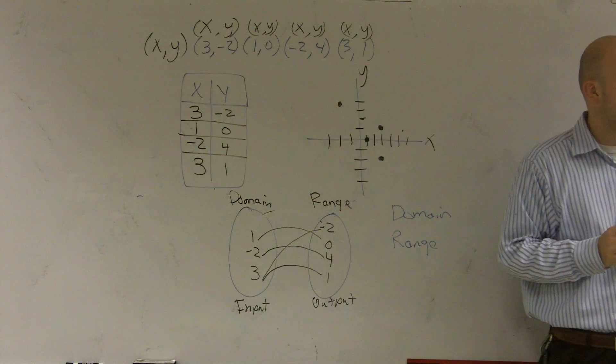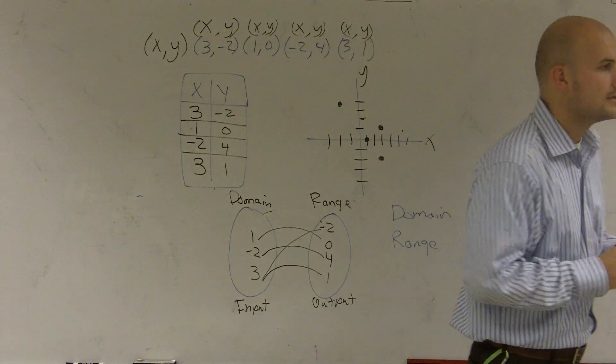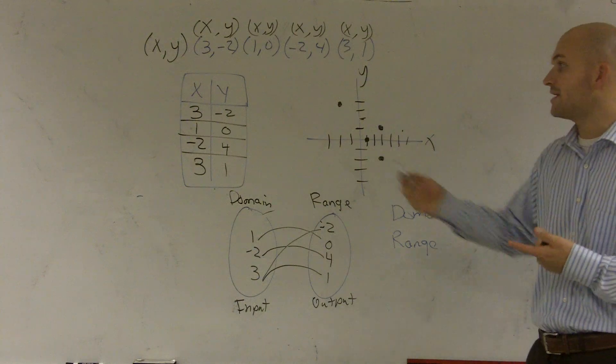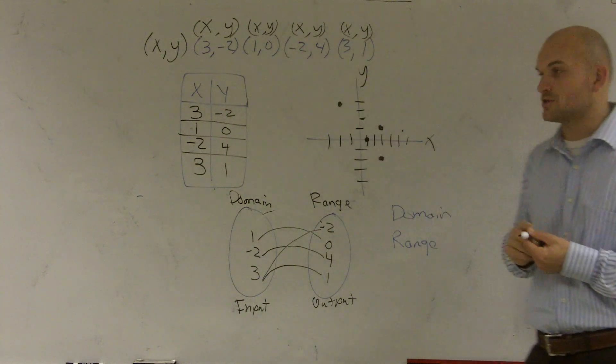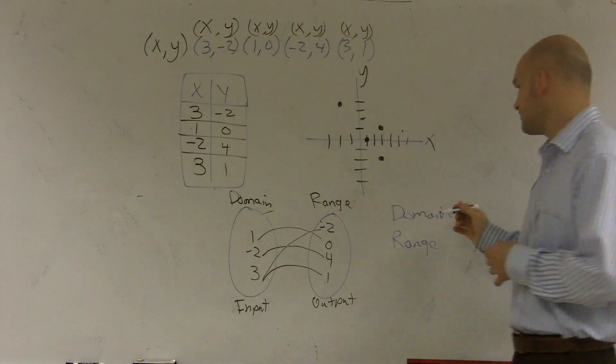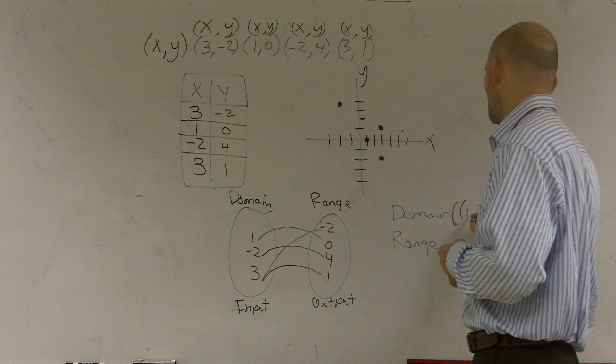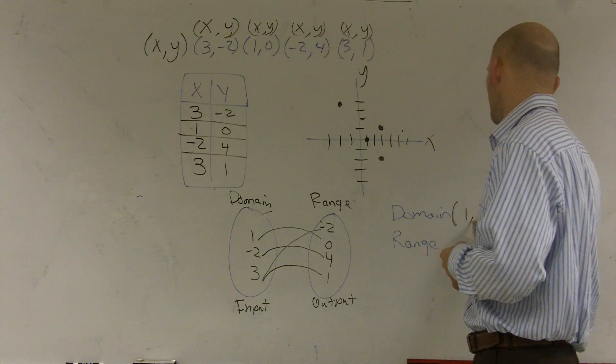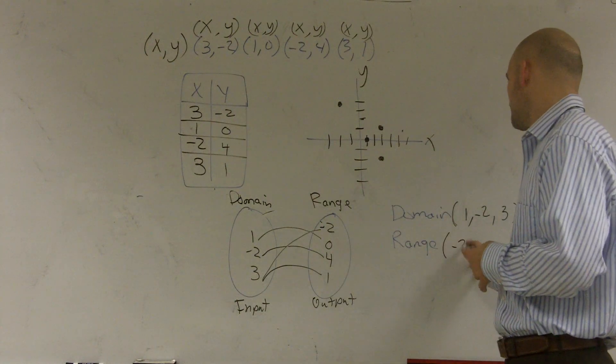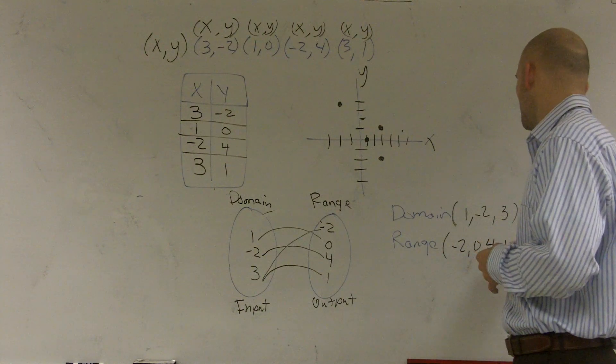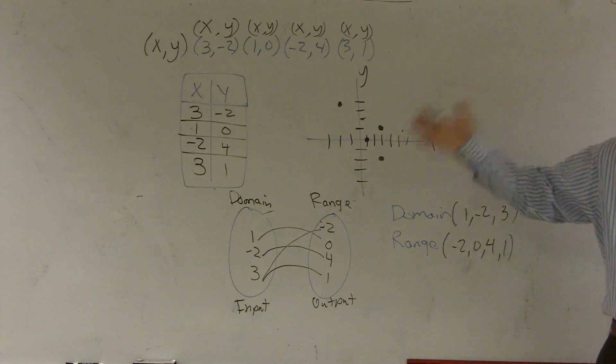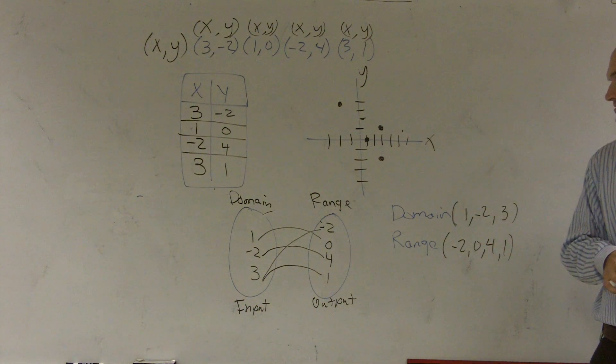The last question asks us to find the domain and range. Remember, domain was all of our X values, and a lot of times we also talk about our input values. If you look at how we represented the X values in each one of these, my domain is going to be 1, 1, negative 2, and 3. And my range is going to be this set: negative 2, 0, 4, and 1. And that's how you write your relations in three different ways and do the domain range.